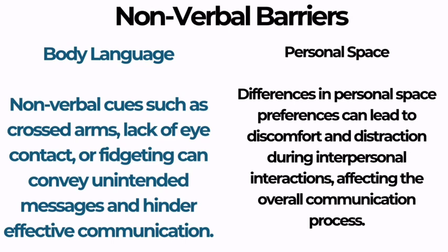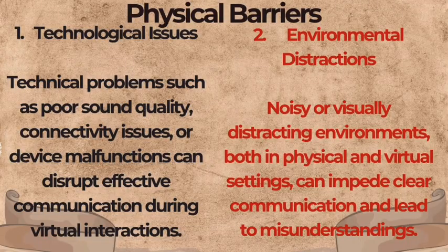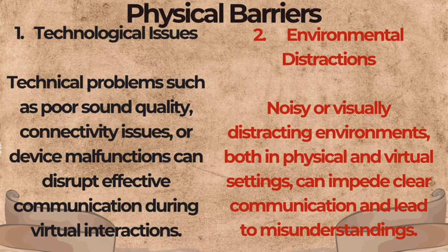Apart from verbal barriers, we also have non-verbal barriers — these don't involve spoken or written words but still affect how messages are understood, such as body language, tone of voice, and physical appearance. Next are physical barriers — things that get in the way of people talking or hearing each other, like distance, noise, or objects blocking their view, including technological and environmental barriers.